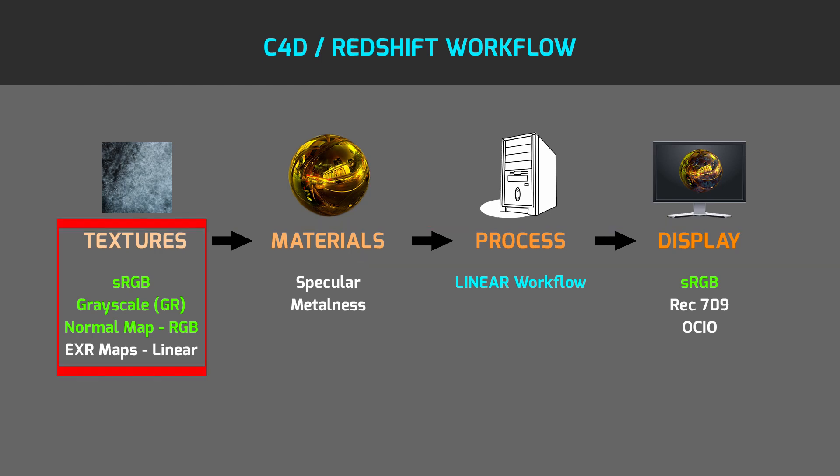We have four types of textures or maps. sRGB textures use the sRGB color space and control material colors such as diffuse color, reflection color, or emission color. Grayscale textures represent data and control material properties such as roughness, bump, ambient occlusion, displacement, or metalness.